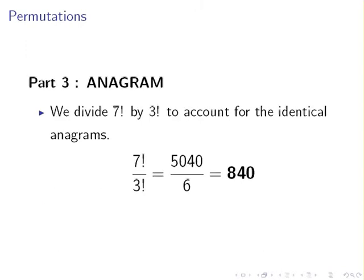So, what we're going to do here is divide seven factorial by three factorial to account for all the identical anagrams. So, it's the number of copies of the same letter. The factorial of that is what we divide by. So, it's seven factorial divided by three factorial. That is 5040 divided by six. So, there are 840 unique anagrams of the word ANAGRAM.